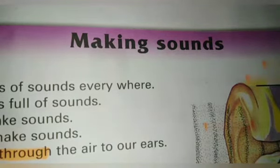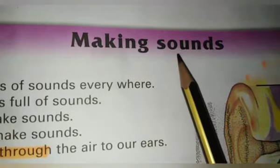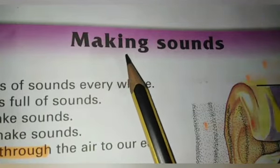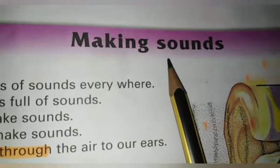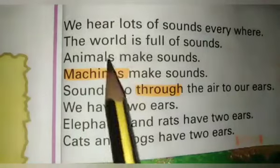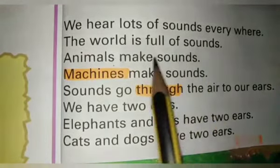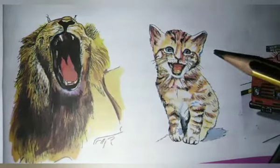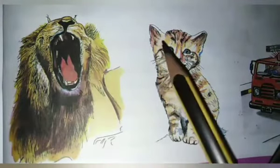All of you open your science book. You have seen the video and explanation of this chapter — making sounds. Now I will read this chapter from your book. It is the last chapter of our final term. Making sounds: we hear lots of sound everywhere. The world is full of sounds. Animals make sounds. As you can see in these pictures, this is the picture of a cat and this is the picture of a dog. All animals make sounds.